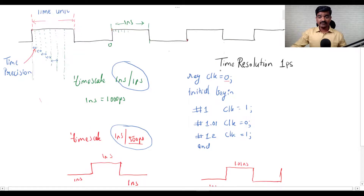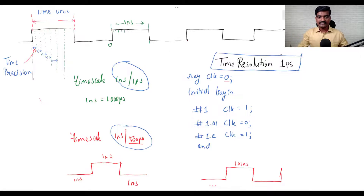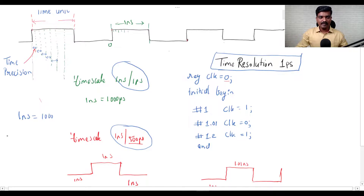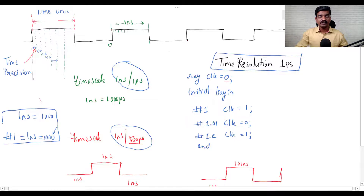Let's also understand what Time Resolution is. Time Resolution is used by the software itself to display time. Within this resolution, the displayed time is in 1 picosecond resolution. For example, if I display 1 nanosecond, it will show 1000 as the value — that is, 1000 picoseconds. Time Resolution is only used for display purposes and does not affect signal generation.